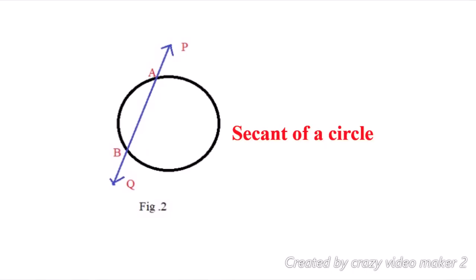The circle and the straight line PQ — both are having two common points, A and B. The straight line is called the secant of the circle. A straight line intersecting the circle at two distinct points is called the secant of the circle.